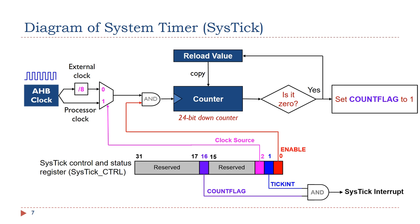Now let's take a look at the control bits in the SysTick control and status register. First of all, the clock source bit selects the clock source for the counter. If the clock source bit is 1, the processor clock is selected. If the clock source bit is 0, the external clock is selected. For STM32L4, the processor clock is the AHB clock. The external clock is the AHB clock divided by a frequency divider of 8.